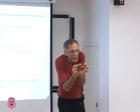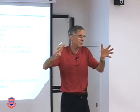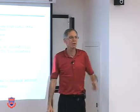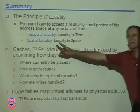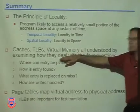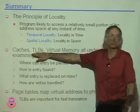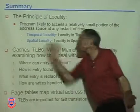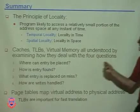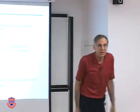Some programs have tight locality; others have broader locality — it depends on code structure, loops, branches, and whether data is structured or unstructured. Caches, TLBs, and virtual memory all look very different: one handles data and code, one handles virtual-to-physical address translation, one handles memory-to-disk. But all three are understood by examining the same four questions, because they're all memory hierarchy issues at different levels.